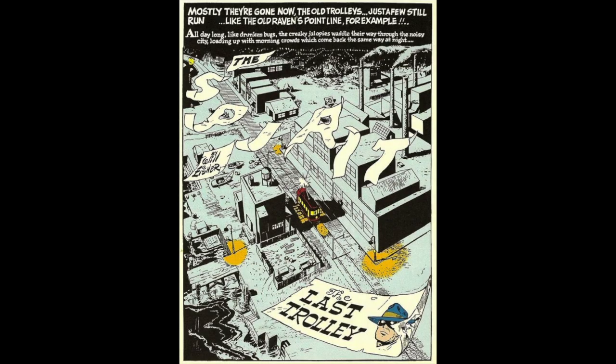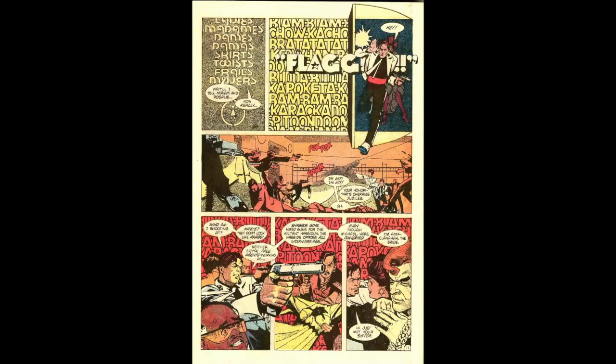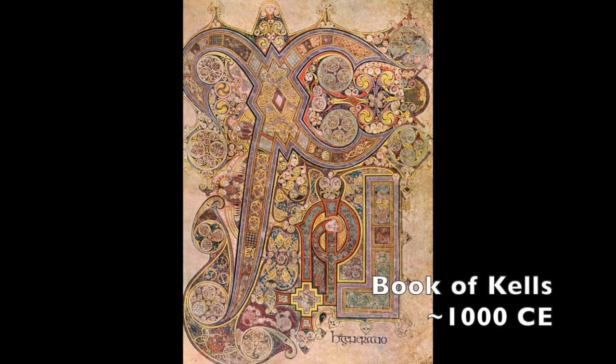Will Eisner's The Spirit famously uses its title pages to incorporate the title of the strip into the world itself, making the name of the character part of the landscape. In American Flagg, Howard Chaikin's use of sound effects is inventive and adds to the sense of design, contributing to an almost cyberpunk sense of information and media overload. Good artists have been doing this for a really long time, and it's not just a comics thing — but comics do it really, really well. See you next time.